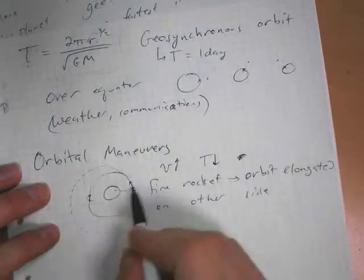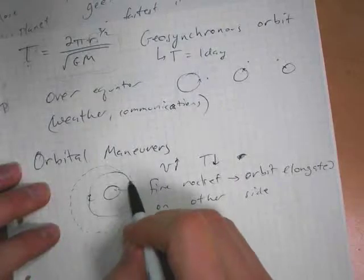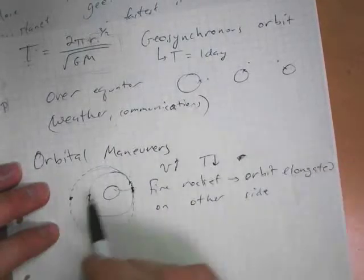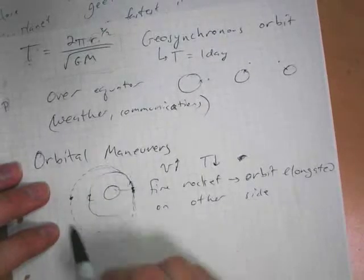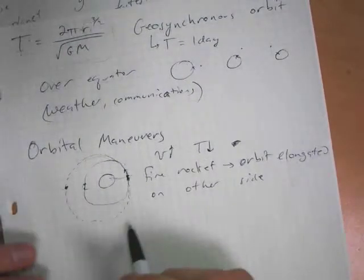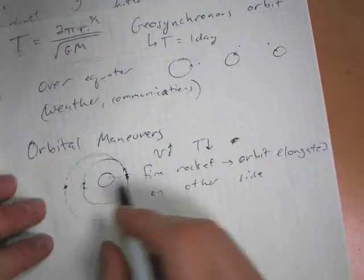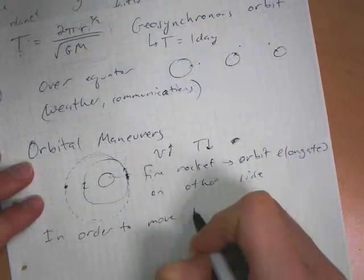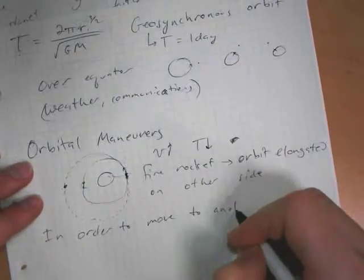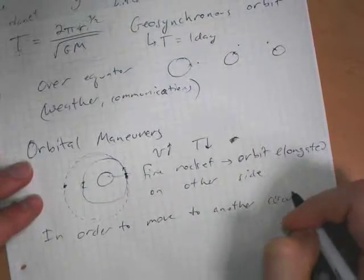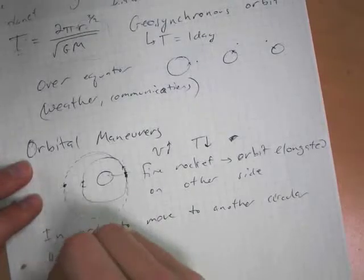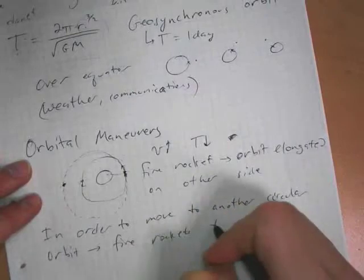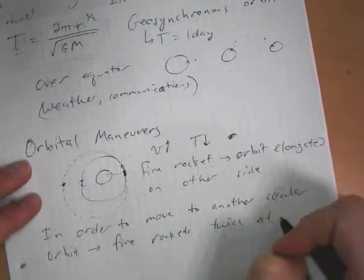the orbit gets elongated on the other side. So it creates an ellipse, and we're still at the same position right here. But then when we come out here, we may move the rocket now into an elliptical orbit, instead of a circular orbit. So in order to move to another circular orbit,